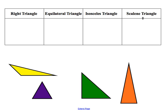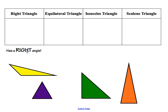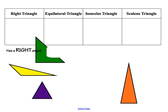Triangles are classified by their types of sides and their angles. The first type we're going to talk about is the right triangle. You can tell if a triangle is a right triangle if it has a right angle. Looking at the four triangles, only one of them has a right angle — the angle that forms a square. We can see that square inside that triangle, so we know this is a right triangle.